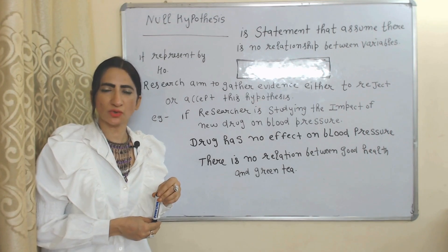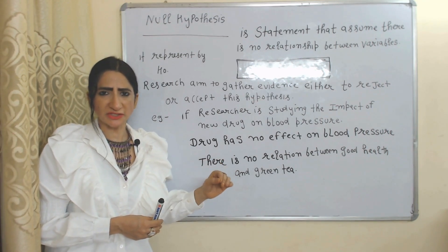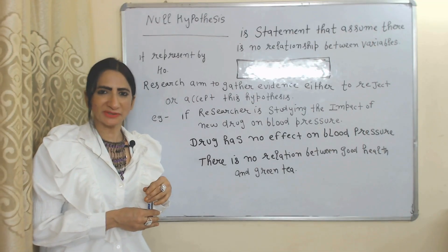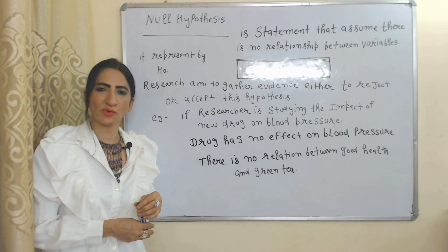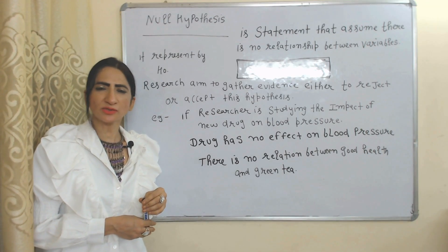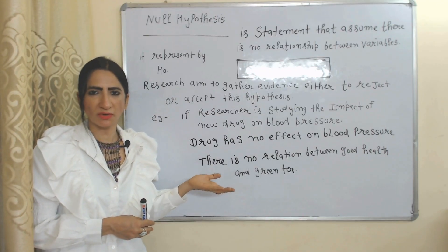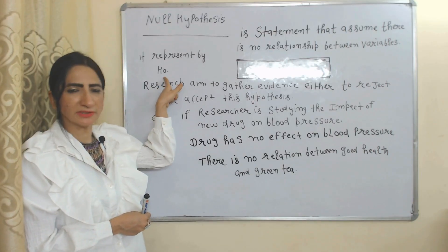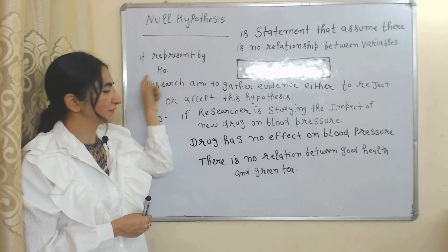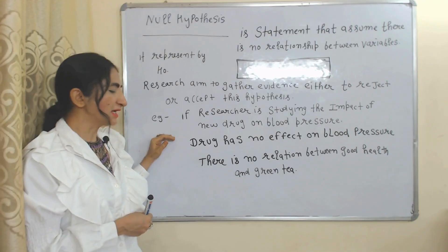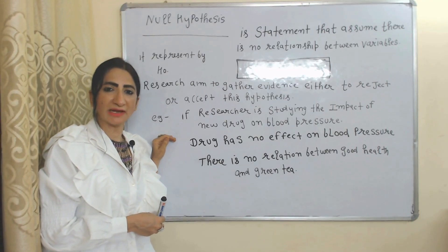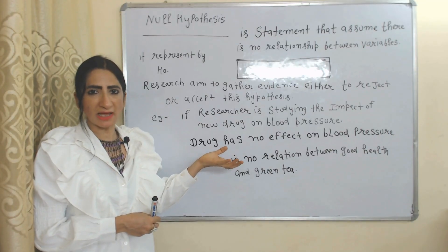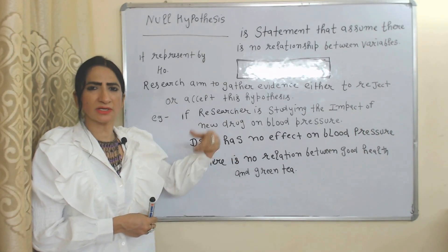What is null hypothesis? Null hypothesis is a statement which shows there is no relationship between two or more variables. We represent null hypothesis with H₀. The main aim of research is to collect evidence to either accept or reject the null hypothesis.